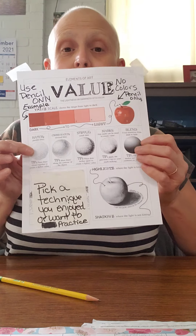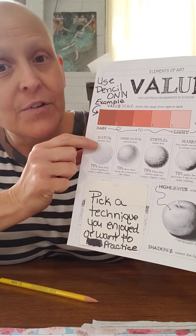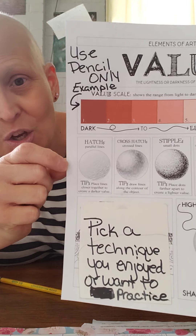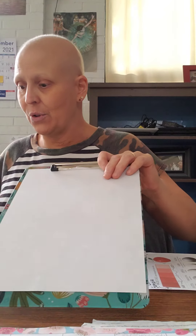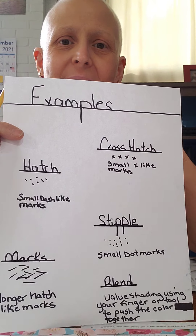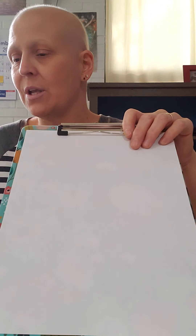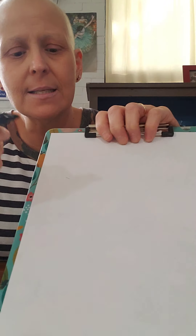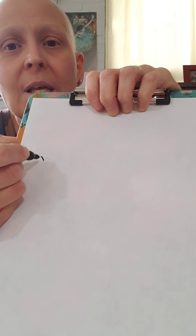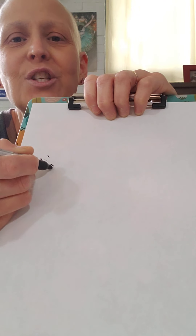The second part of our worksheet, we are learning some techniques. Our first technique is called hatch. Hatch marks are made just like this, and there's an example I put online. I'm going to use a marker to demonstrate — don't use a marker though. You will use a pencil, but I want you to be able to see this. You will just use small little marks, little dashes — those are hatch marks.